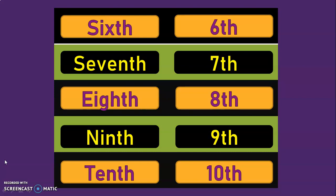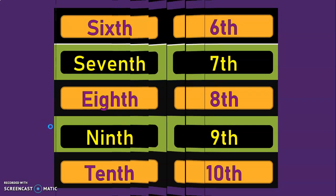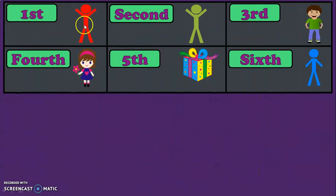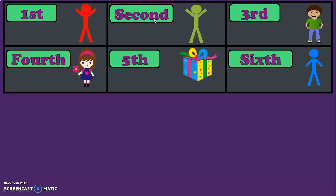It is very important that children learn the number names for all the ordinal numbers and their corresponding numerals. Let us go into the activity section of this video now. Here I have given you six objects, and I have also named the position of these objects. Ordinal numbers give you the position of the object — that is the definition we saw. I have given some positions in numerals and some in number names.